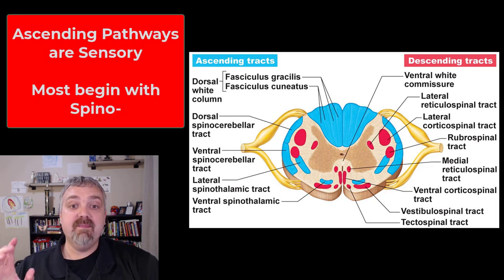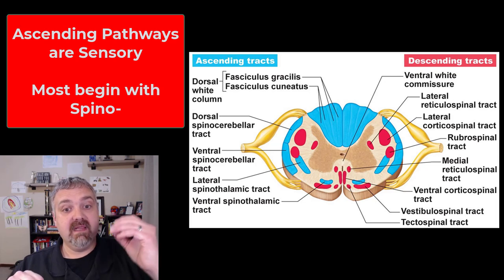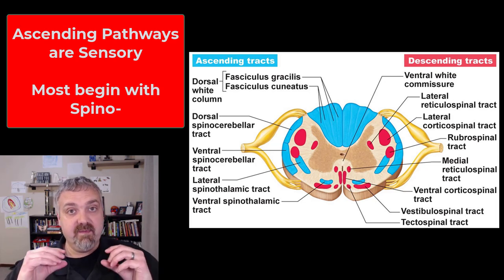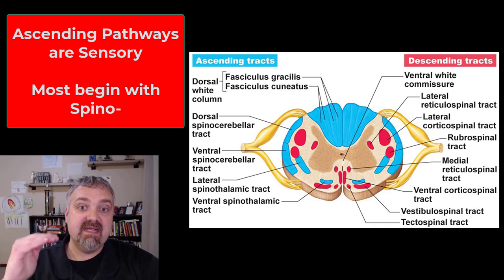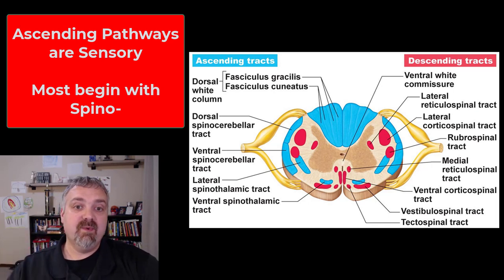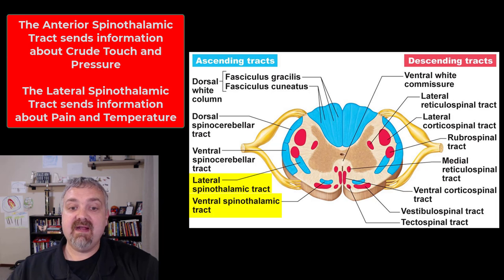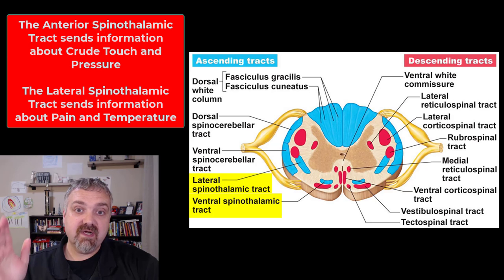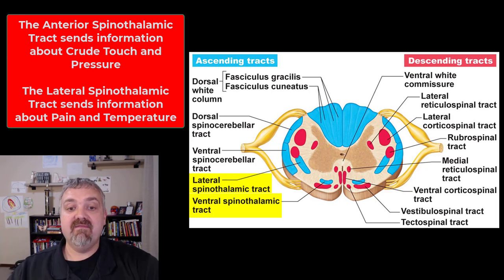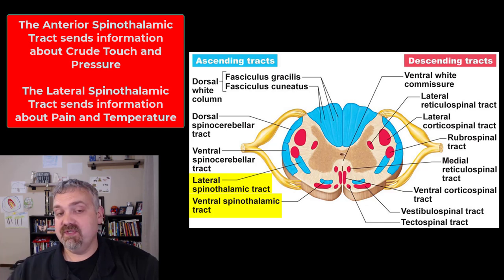Okay, so the ascending pathways — a simple way to remember most of them is they start with 'spinal.' So you say spinocerebellar, spinothalamic — their information is starting low and traveling up. Remember, all ascending information is sensory. Most of the time they start with spinal. Let's start with the anterior spinothalamic tract — this image uses 'ventral' — which sends information about crude touch and pressure up towards your brain. Then we have the lateral spinothalamic tract, which sends information about pain and temperature. So those are the two spinothalamic tracts.